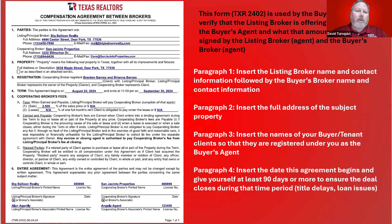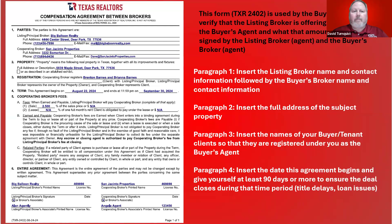We start off with paragraph one, the parties — just like most contracts, you have the buyer and the seller, or the landlord and the tenant. In this case, you have the listing broker. You're going to put the name of the listing brokerage, and then you're going to put your brokerage here as the buyer's broker. Next will be the property information, the address.